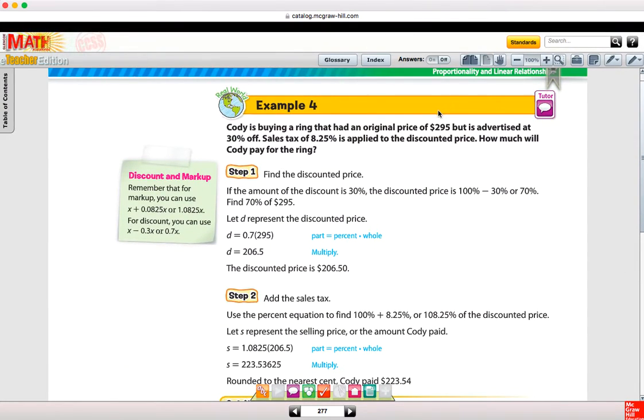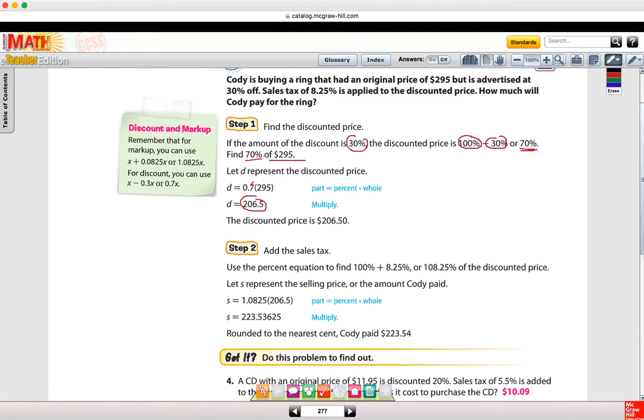So example four, we're talking about original price of $2.95, but it's being offered at a discount. And we're also talking about sales tax. So tying in a few more things. The amount of the discount is 30%. And so again, taking that 30% away from 100% to get 70%. So step number one is to find 70% of $2.95. You might be wondering, could I have taken $2.95 times 0.3 and subtracted it? Yes, you can. But in this case, they use the different method. So we have that the discounted price, when we multiply by 0.7, is $2.06.50.